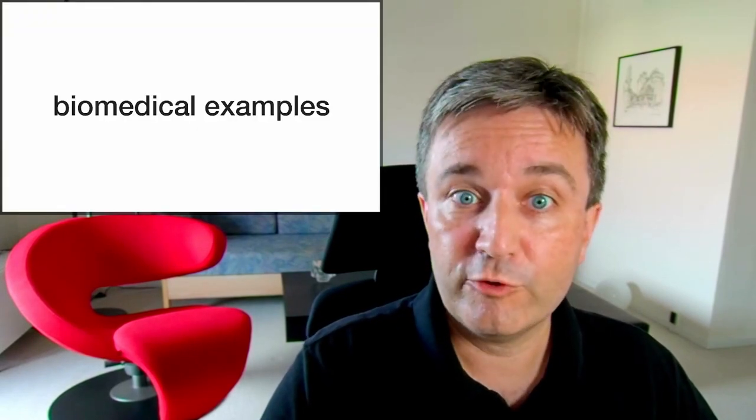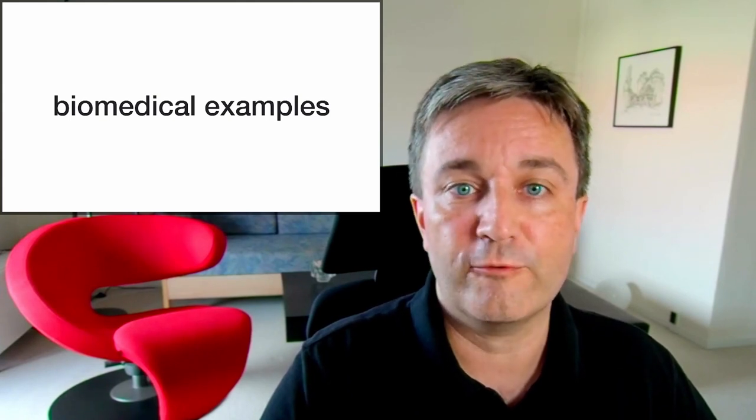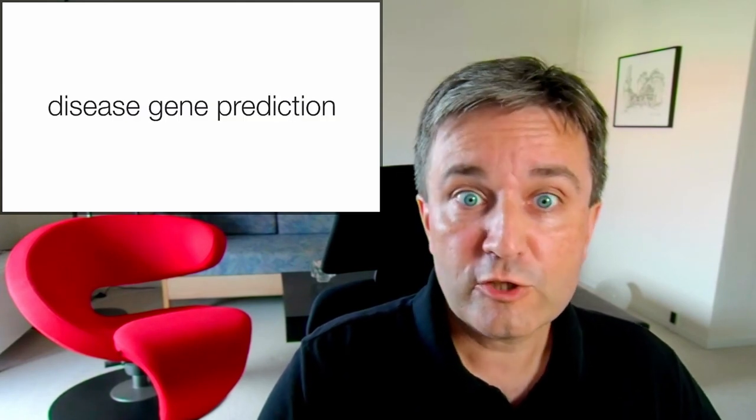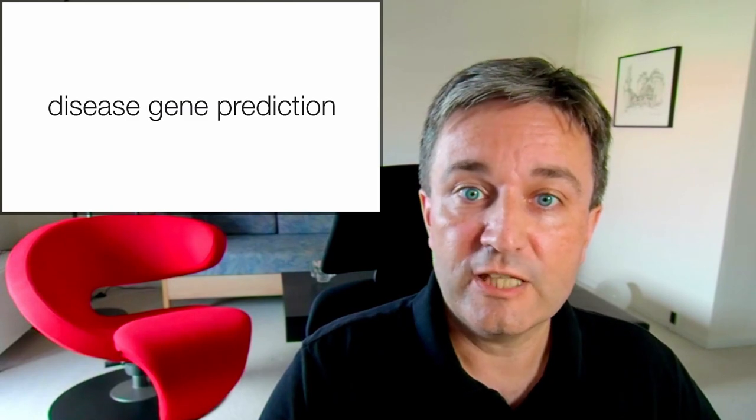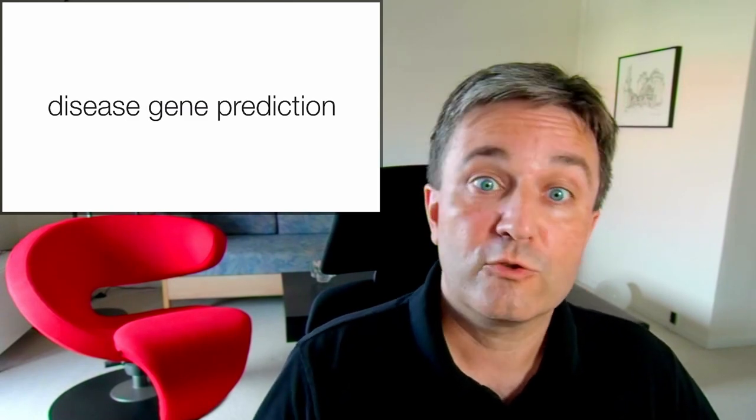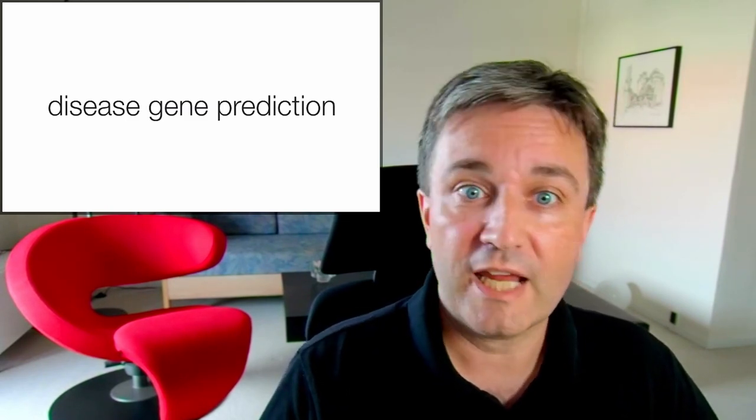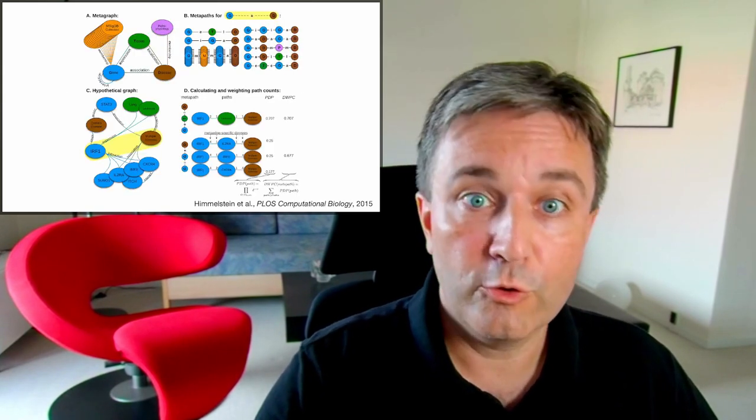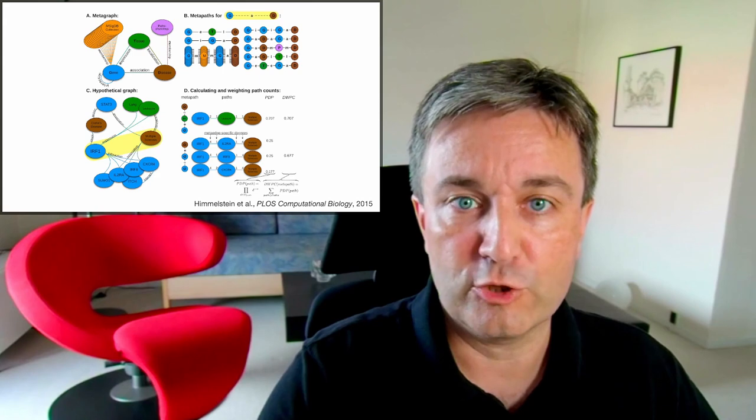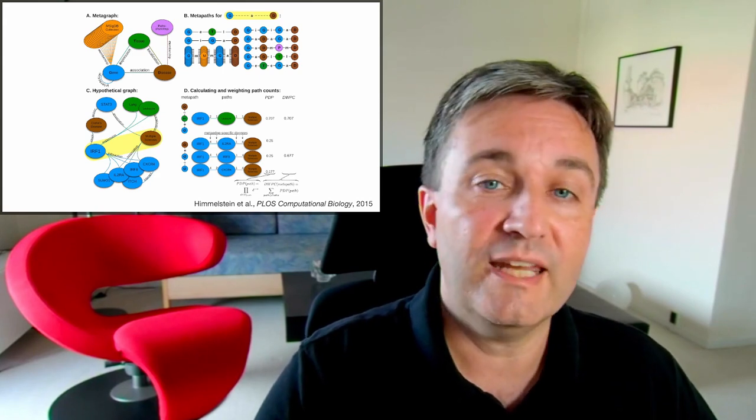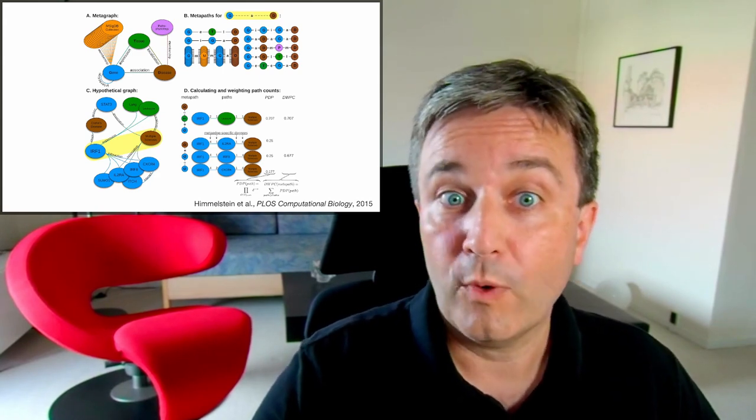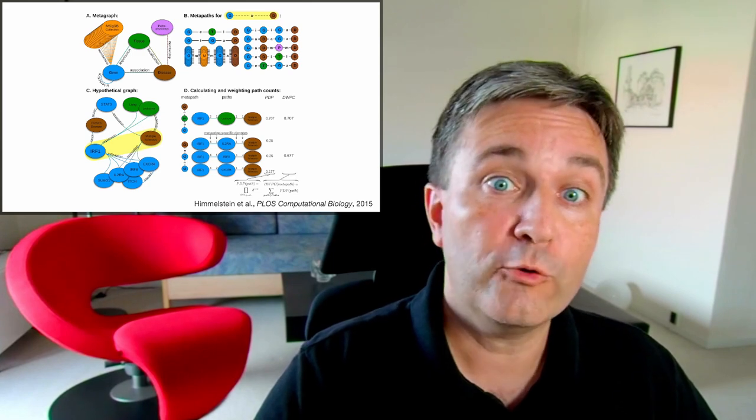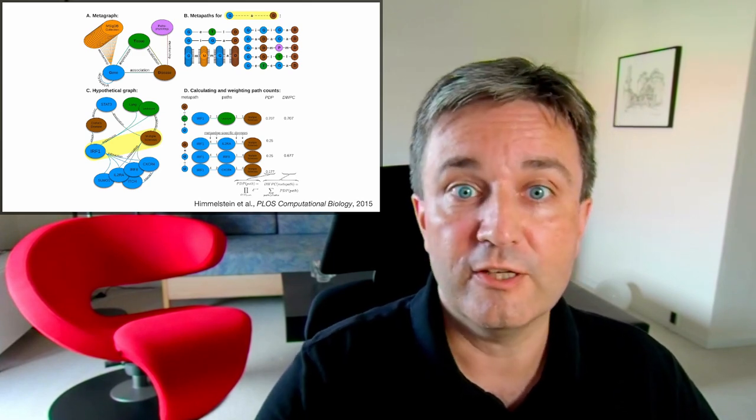Lastly, a few biomedical examples. What do we use knowledge graphs for? Knowledge graphs have been used for doing gene disease prediction. That means trying to find new associations between diseases and genes. This can be done by looking for metapaths in a knowledge graph. So that is looking for indirect associations where a gene and a disease are both linked to the same intermediate concepts.